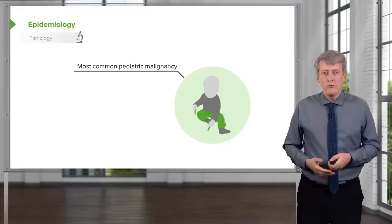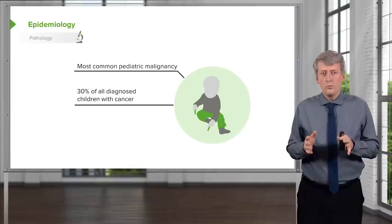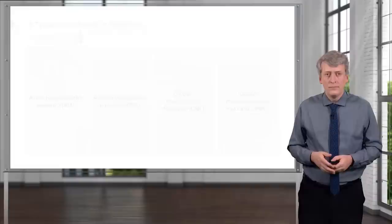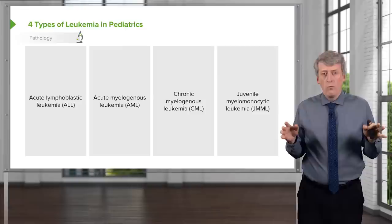Let's go through the epidemiology of leukemia in children. It is the most common pediatric malignancy. 30% of all newly diagnosed children with cancer have leukemia, and boys typically get it a little more than girls. In kids, we break down leukemia into four major types.